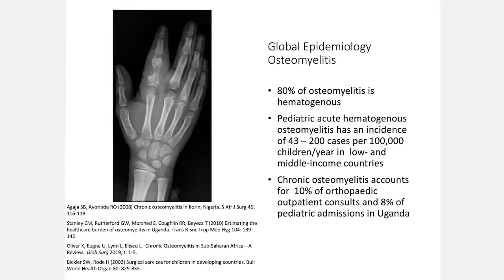In terms of the global epidemiology of osteomyelitis, a study in Nigeria revealed that 80% of osteomyelitis is hematogenous in origin, despite the high rates of trauma and requisite bone fixation practices. This is really important to keep in mind, because a lot of it stems from hematogenous origin in childhood. Pediatric acute hematogenous osteomyelitis has an incidence of 43 to 200 cases per 100,000 children in low- and middle-income countries. In a study in Uganda, chronic osteomyelitis accounted for 10% of outpatient consults as well as 8% of pediatric admissions.